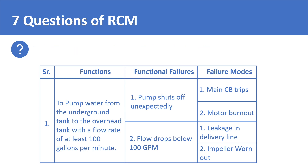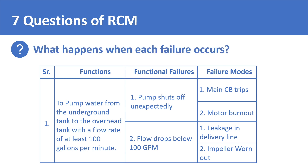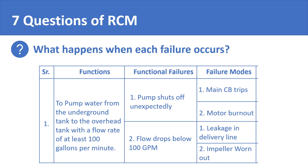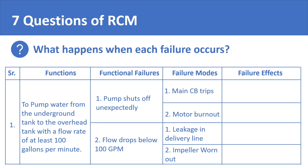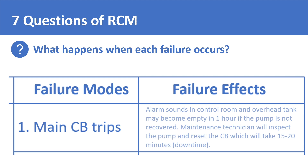The fourth question of RCM is: what happens when each failure occurs? That is to say, what are the effects of each failure? For example, the effect of a circuit breaker tripping would be that an alarm sounds in the control room, or maybe a red light flashes over the pump to grab the attention of operations people. In this way, the fourth step of RCM is to figure out all the different types of failure effects.